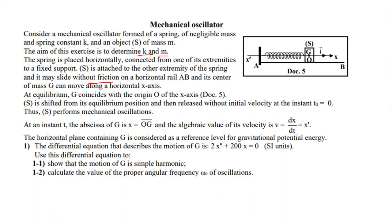G is along the axis X to X, and we must pay attention — this is the positive direction. At equilibrium, G coincides with the origin O. S is shifted from its equilibrium position and then released without initial velocity at T₀ equals 0.